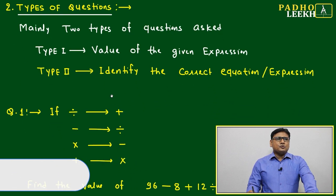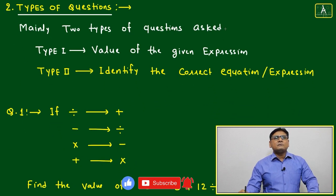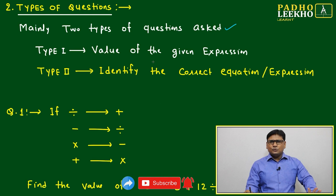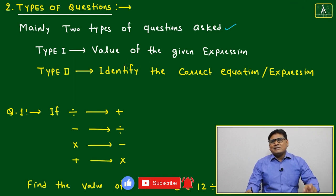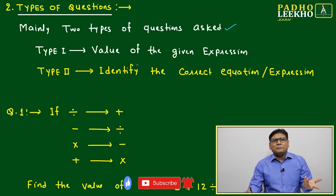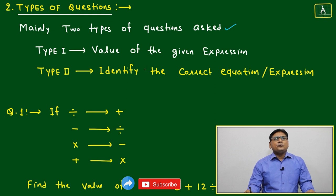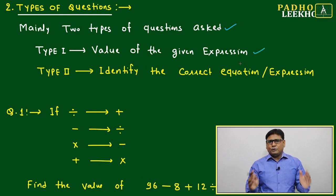Now coming to types of questions. Mainly two types of questions are asked. In that, you can say further subcategories exist, but there are two major categories. Type I is the value of a given expression.